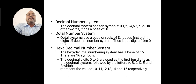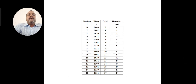Hexadecimal number system: the hexadecimal number system has a base of 16. Here, 16 symbols are used. The decimal digits 0 to 9 are used as the first 10 digits, as in the decimal system, followed by the letters A, B, C, D, E, and F, which represent the values 10, 11, 12, 13, 14, and 15 respectively. The screen will be focused on the equivalent values of binary, decimal, octal, and hexadecimal number systems.